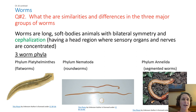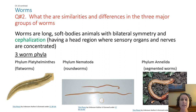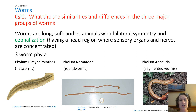Hi guys, back to talk about more simple animals. We have already covered the sponges and the cnidarians, and we're on to worms now. So the big question, kind of following along with your book, is what are the similarities and differences in the three major groups of worms?